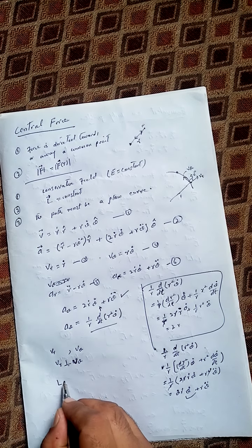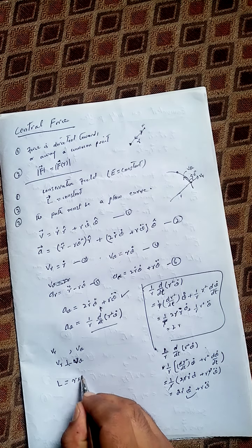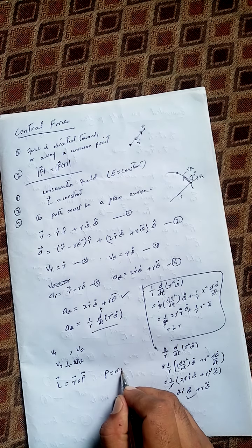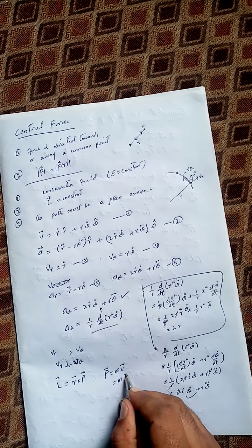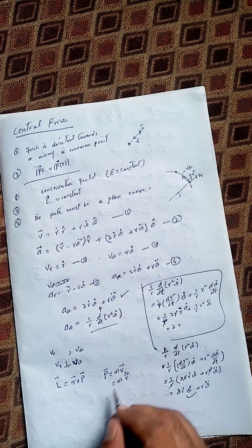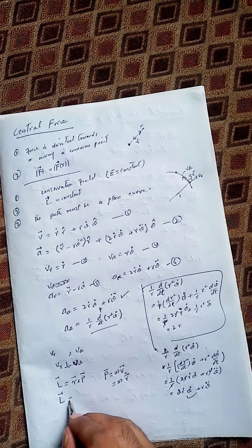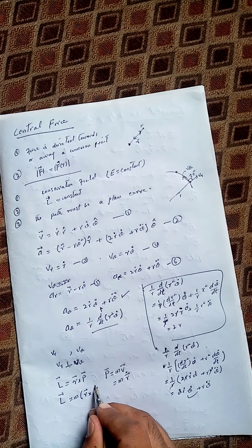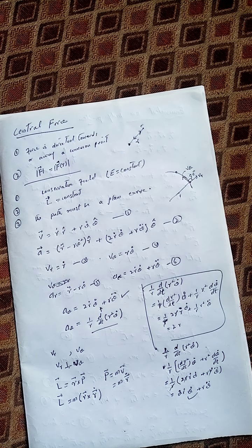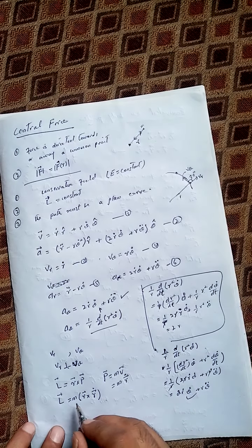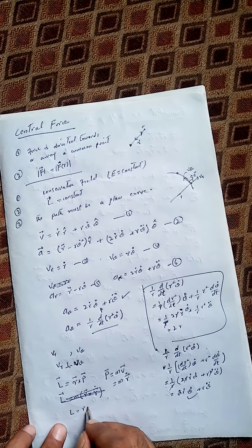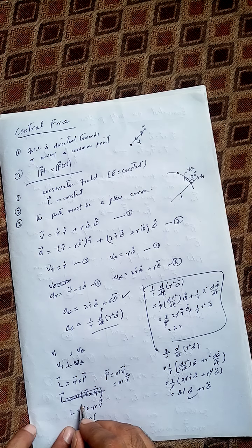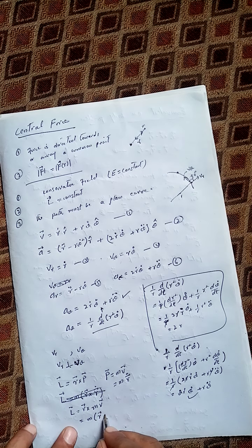Now the angular momentum L can be defined as r × p, where p = mv. So L = r × mv = m(r × v).